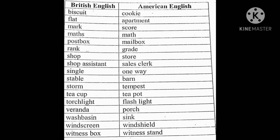Stable — barn. A stable is a place where horses are kept. Americans say 'barn.' Storm — tempest. Actually the word tempest was used by Shakespeare — his last play was 'The Tempest.' Teacup — teapot. Torchlight — flashlight. Veranda — porch. Washbasin — sink. Windscreen — windshield. Witness box — witness stand.